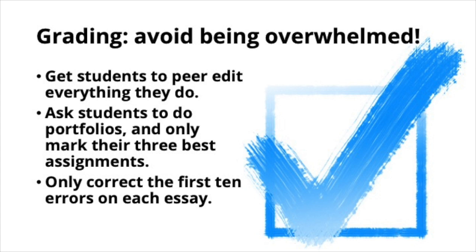Grading can be a challenge — don't be overwhelmed. First, get students to peer edit everything they do. That means turning over their assignments — whether a video, a paragraph, an essay, or even a drawing — to another student to get some feedback. Everybody learns and benefits in this way. Ask students to do portfolios and only mark their three best assignments, which works particularly well with upper-level students. Another strategy is to only mark the first 10 errors in any essay. For some students, this may all come in their first paragraph; in others, you may get through the entire essay and only find nine errors. In this way, you're rationing your time, and because students often make the same errors over and over, correcting a few will give them guidance on what else they should fix on their own.